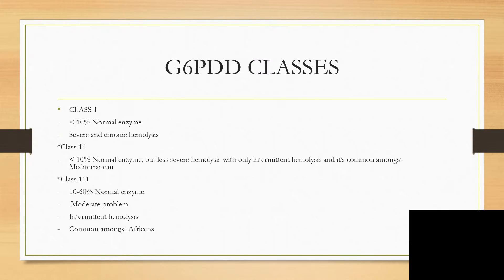There are different classes of glucose-6-phosphate dehydrogenase deficiency. Class 1 has less than 10% of normal enzyme activity — meaning about 90% of the enzyme is deficient — so it is very severe, and hemolysis in them is chronic.